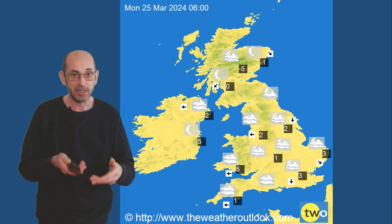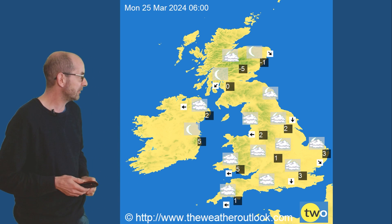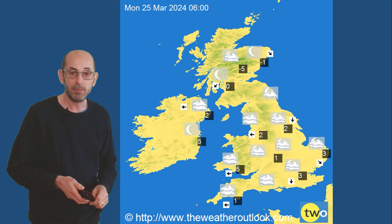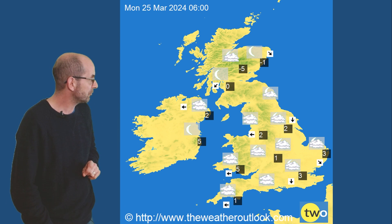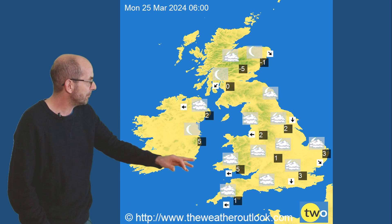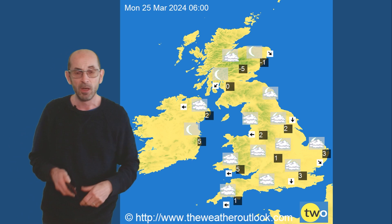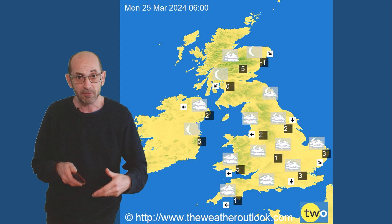Much will depend on clear periods forming and winds becoming lighter. This illustrates forecast minimums on Monday morning — minus five in the Scottish glens, but even in parts of the south just above freezing, so quite a widespread frost potential towards the end of the first week.